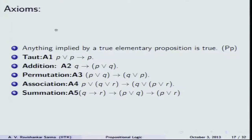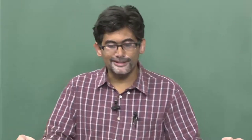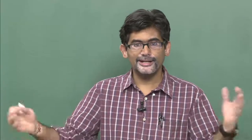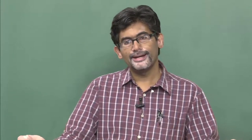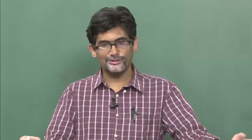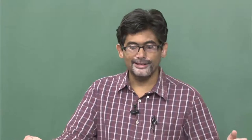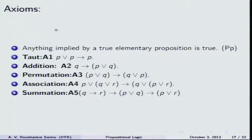Material implication was questioned by C.I. Lewis in his Survey of Symbolic Logic, who argued that material implication does not fully capture deduction. In that context, C.I. Lewis came up with strict implication, which led to modal logics and non-classical logics. The Principia Mathematica served as a starting point for many non-classical logics.